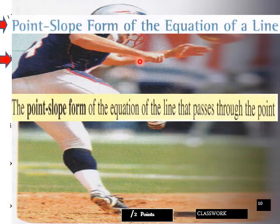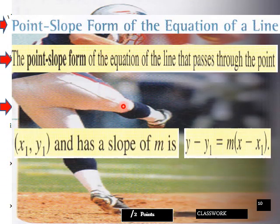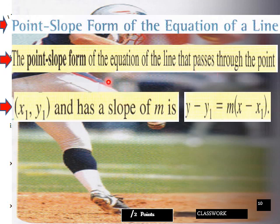Okay, page 10. Point slope form of equation of the line. Point slope form of the line passes through the point x1, y1 and has the slope of m is y minus y1 equals m times x minus x1. So this is a different kind of formation here.